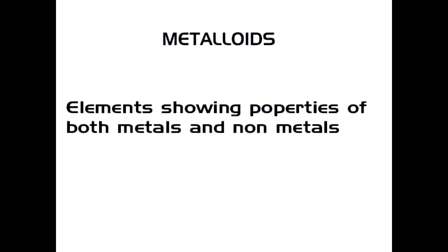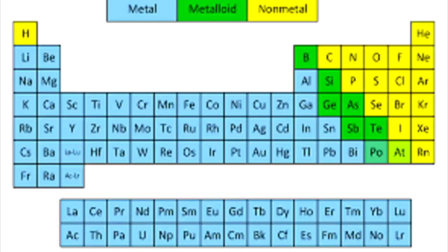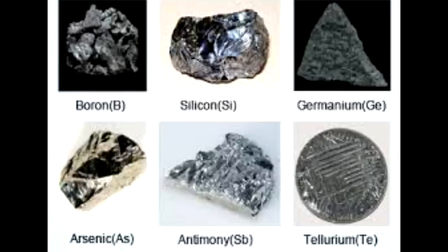Metalloids have properties of both metals and non-metals. The metalloids shown in green on the periodic table are boron, silicon, germanium, arsenic, antimony, and tellurium. These are what we call metalloids.